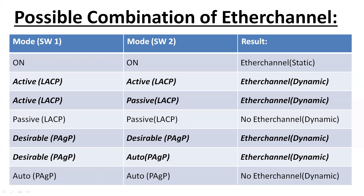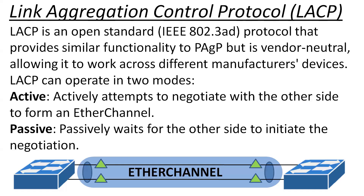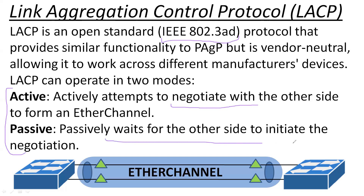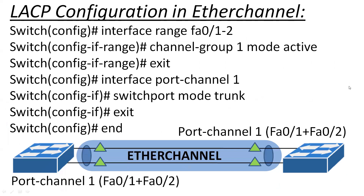LACP is an open standard protocol. There are two modes: active and passive. The IEEE standard is IEEE 802.3ad. Active mode actively negotiates to create the EtherChannel, while passive mode waits for the other side to initiate the negotiation — meaning it waits for a message from the other side. The configuration steps are: select multiple interfaces, then create a channel-group and provide the mode information.